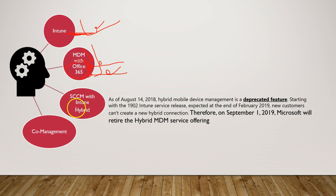The third option is the hybrid option. This is where you can manage your clients from SCCM on-premises, and if you have taken an Intune subscription, you would set it up in hybrid mode. Mobile device management can be done from Intune in combination with the hybrid solution. Unfortunately, this solution is no longer supported.